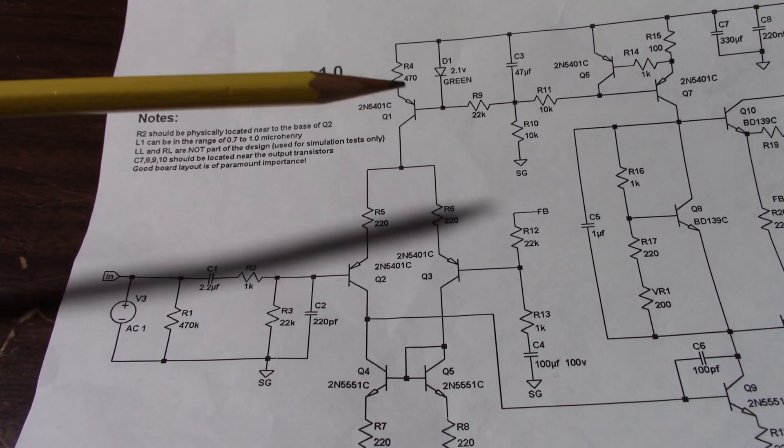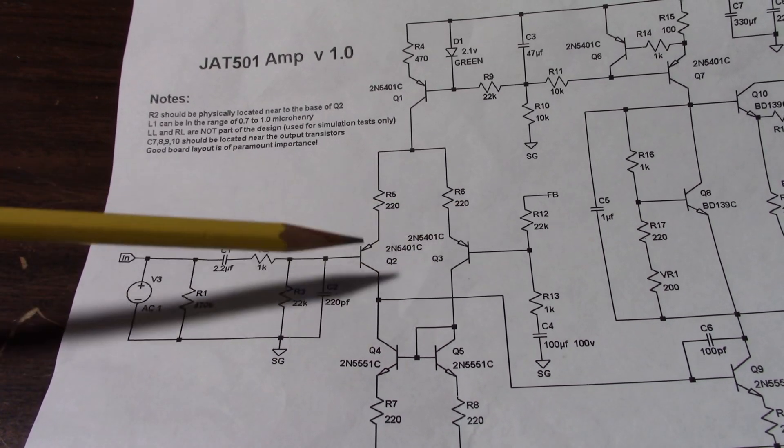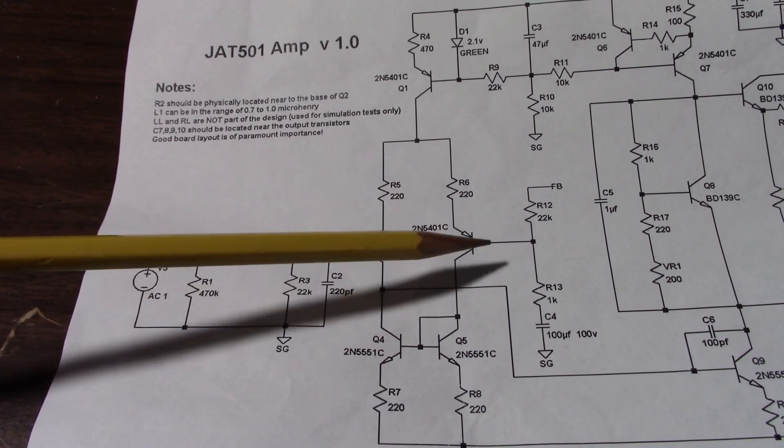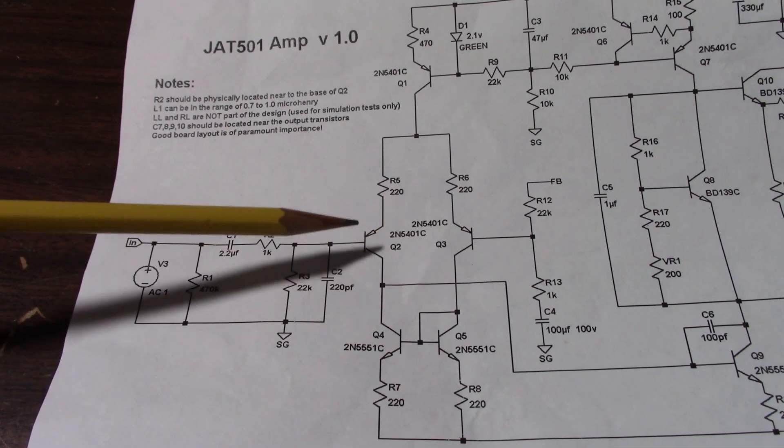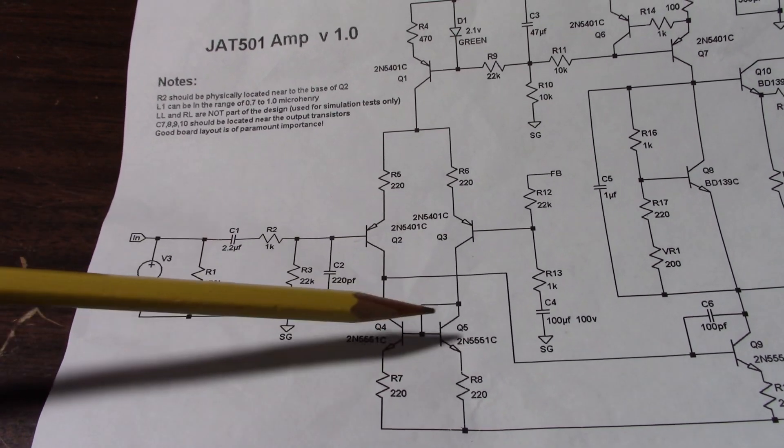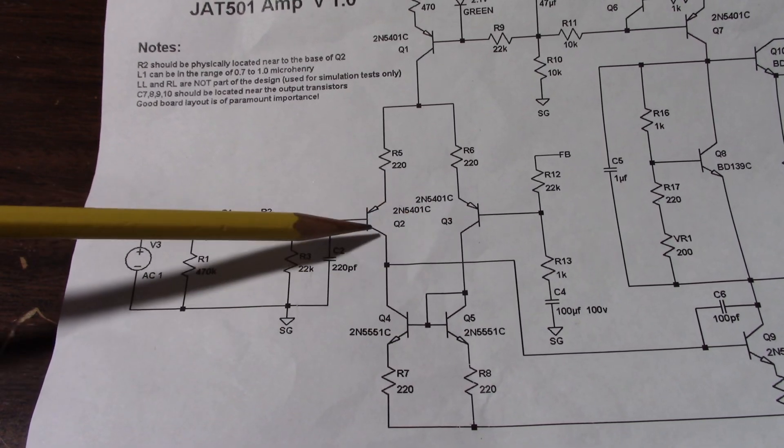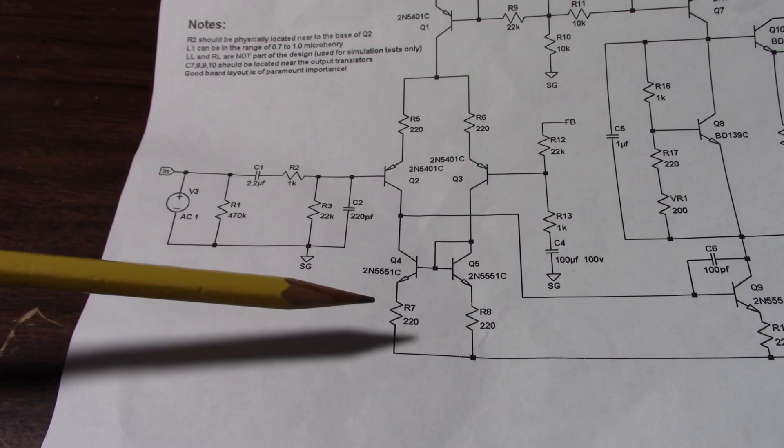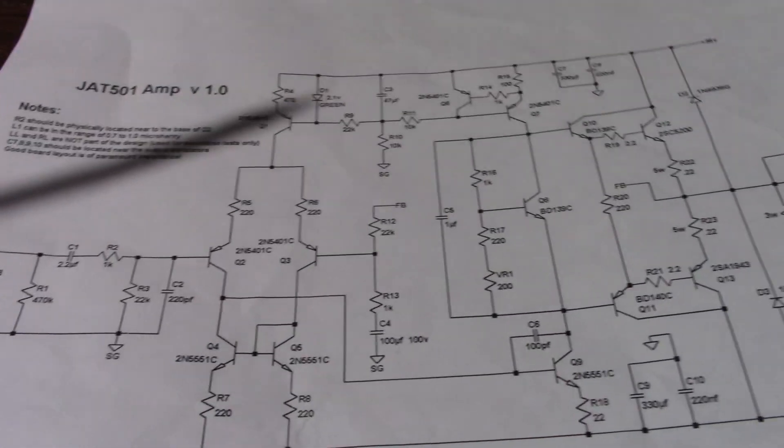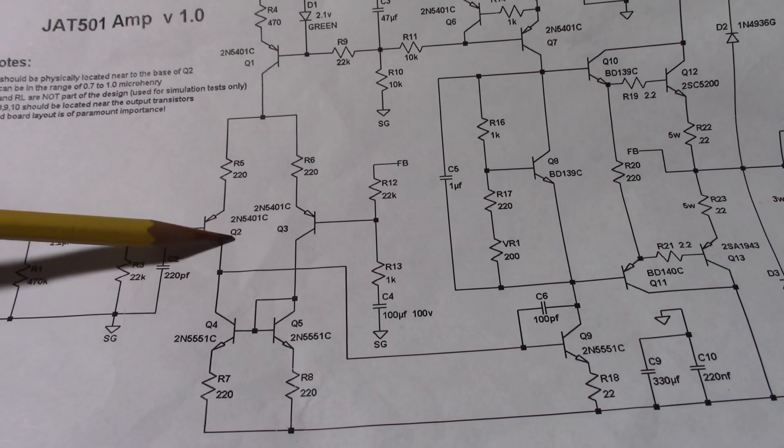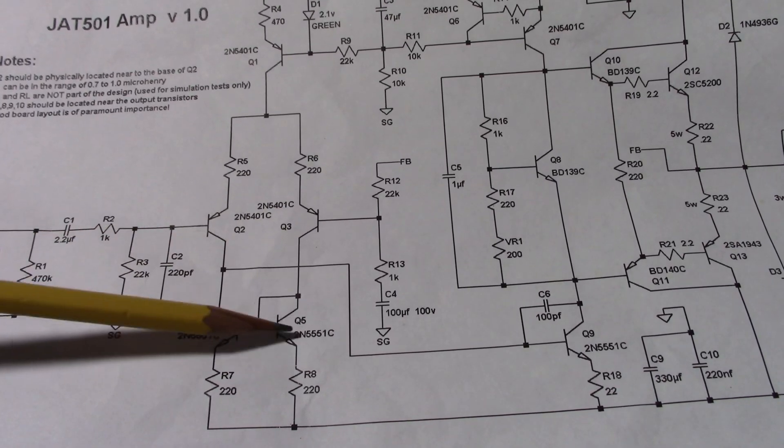And also match the current mirror transistors as well. You don't have to worry about this constant current source transistor, obviously there's nothing to match it with. Pretty much transistors that are opposing each other, or whatever a better word would be, that are working against, opposing, complimenting, whatever you want to call it, should be matched. So yeah, match these transistors, match these.